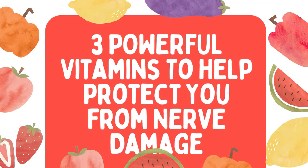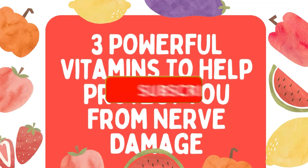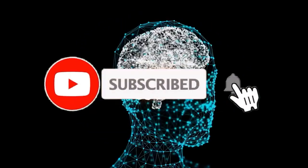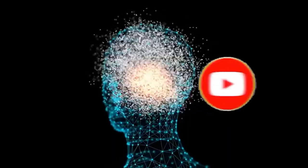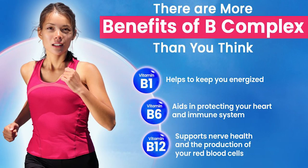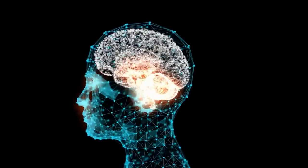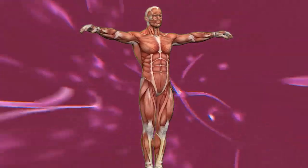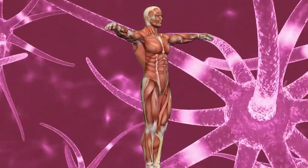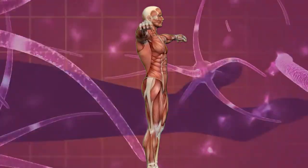Three powerful vitamins to help protect you from nerve damage. Vitamin B1, B6, and B12 are fundamental for nerve well-being. These vitamins are referred to as neurotropic because they can aid in the healing of nerve damage and alleviate symptoms of nerve damage.